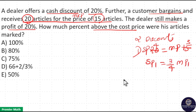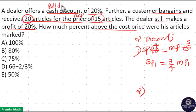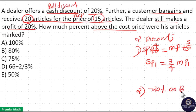That is, 75 percentage of marked price. Now the second discount is a cash discount — also called a bill discount — meaning when you pay the bill amount, you get 20 percentage discount on your bill amount.